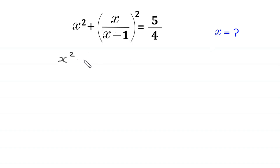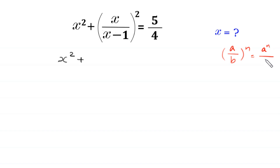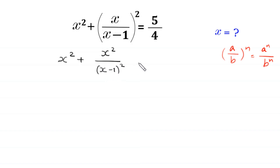Using the power rule — (a/b) to the power n equals a to the power n over b to the power n — this (x over x minus 1) whole squared will become x squared divided by (x minus 1) whole squared, is equal to 5 over 4.